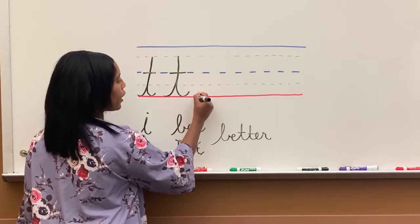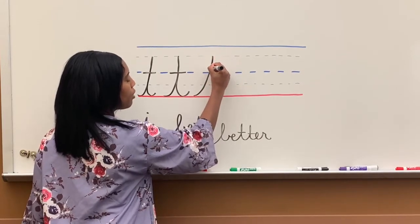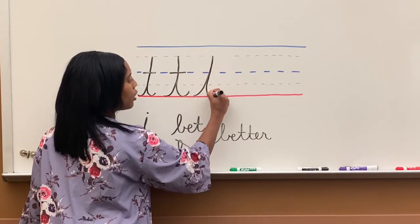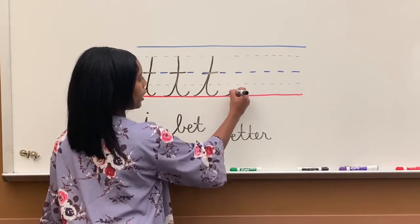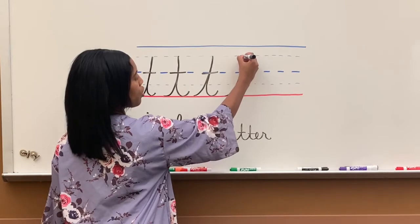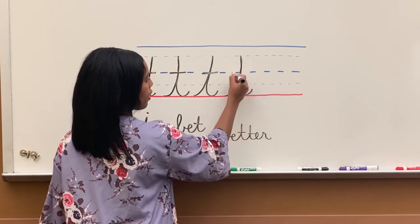Again, T will curve up. You come straight down. Kick it out and then cross. Again, curve up, straight down the same line, then it will kick out, then you cross.